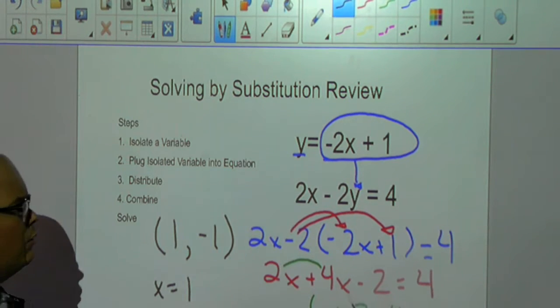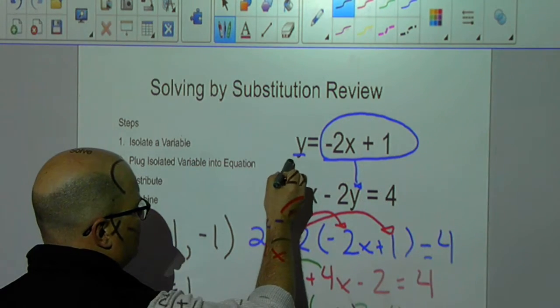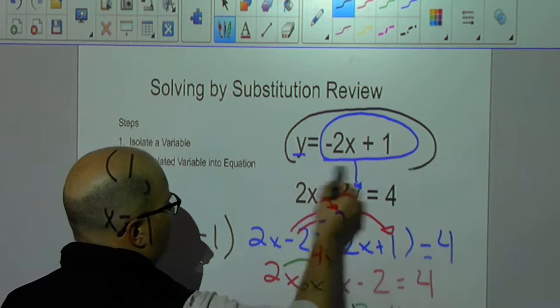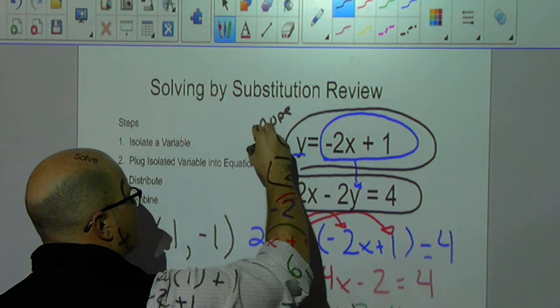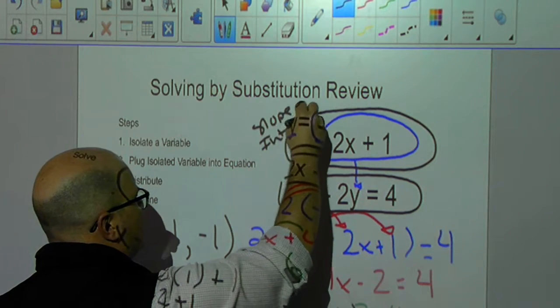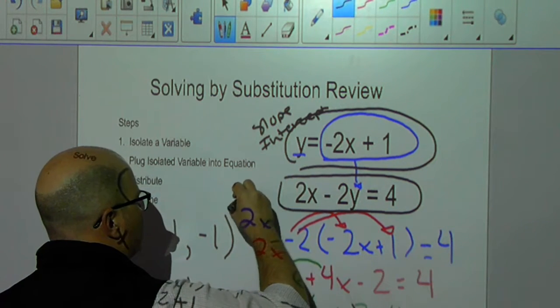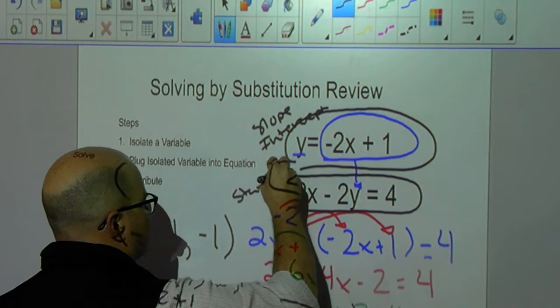Now, that makes it really easy when you have something that's in slope-intercept form and a standard form equation. This would be slope-intercept, because it's in y equals mx plus b. And this would be standard, because it's got two variables on the same side.